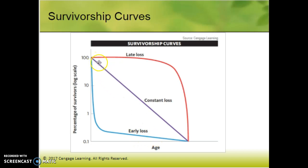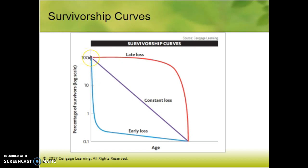Late loss is like humans — a lot of us are born, a lot of us survive until 30, 40, 50, and then all of a sudden large numbers start to die. Constant loss is more rare: once the generation is born, you won't have a bunch die off soon, but you'll gradually have species die off at a pretty constant rate. That one is pretty rare. So that's chapter five.